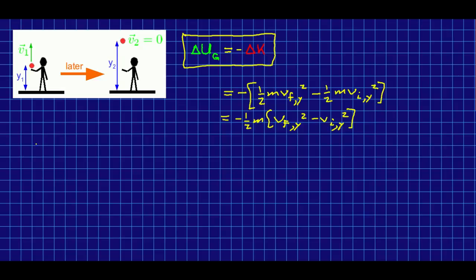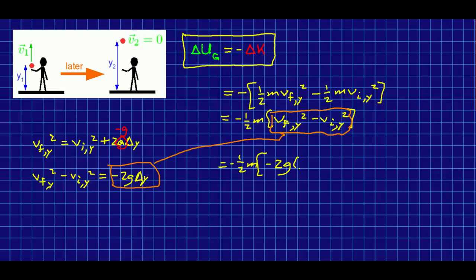And now I'm going to note that this is a uniform acceleration situation, and so all our equations of uniformly accelerated motion should apply. And in particular, I've got squared components of velocities. So I would think that this equation here ought to be useful to us, and in particular, that a is just negative g. So I can rewrite this as negative 2g times delta y. And now I can just substitute this in here.